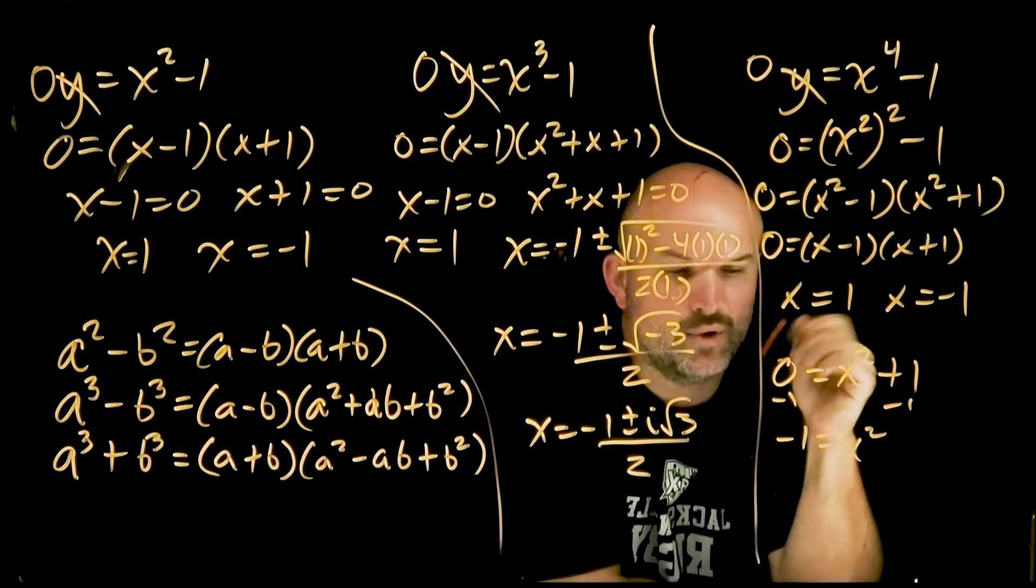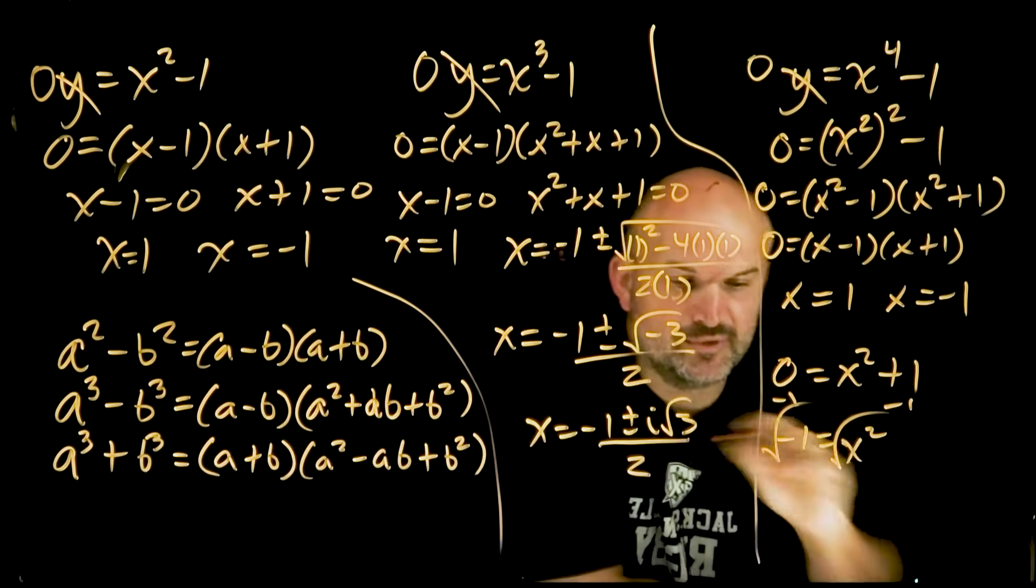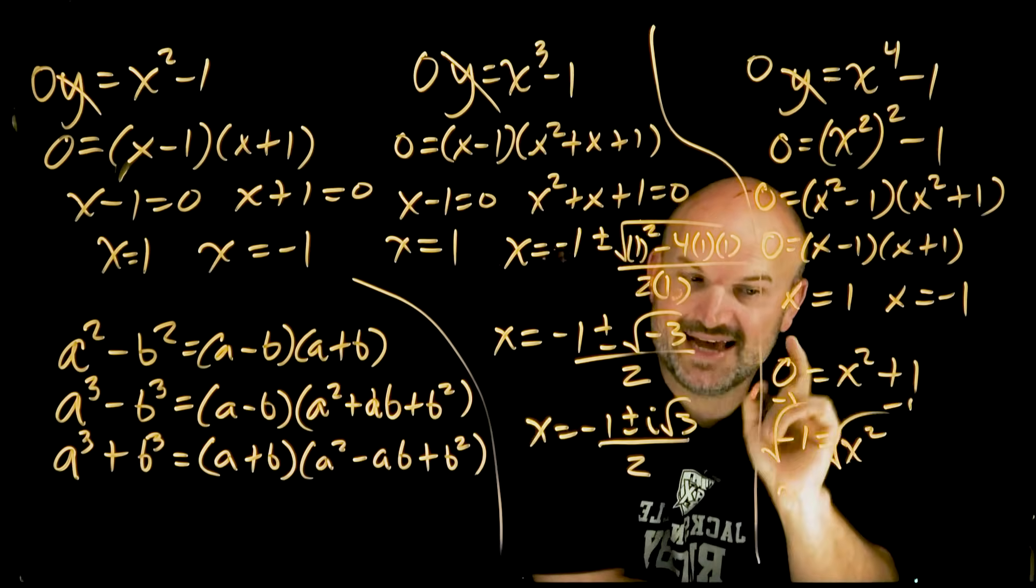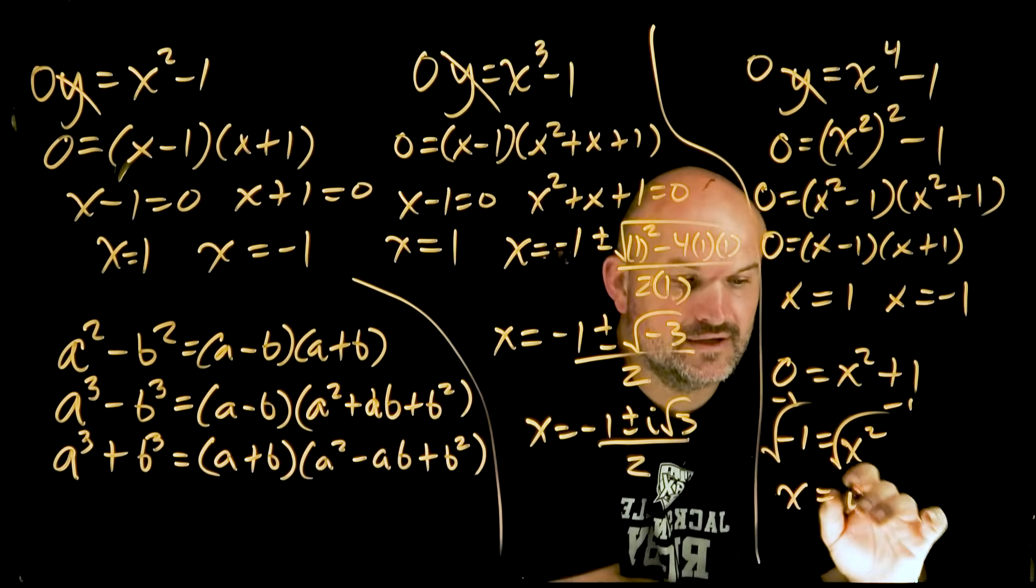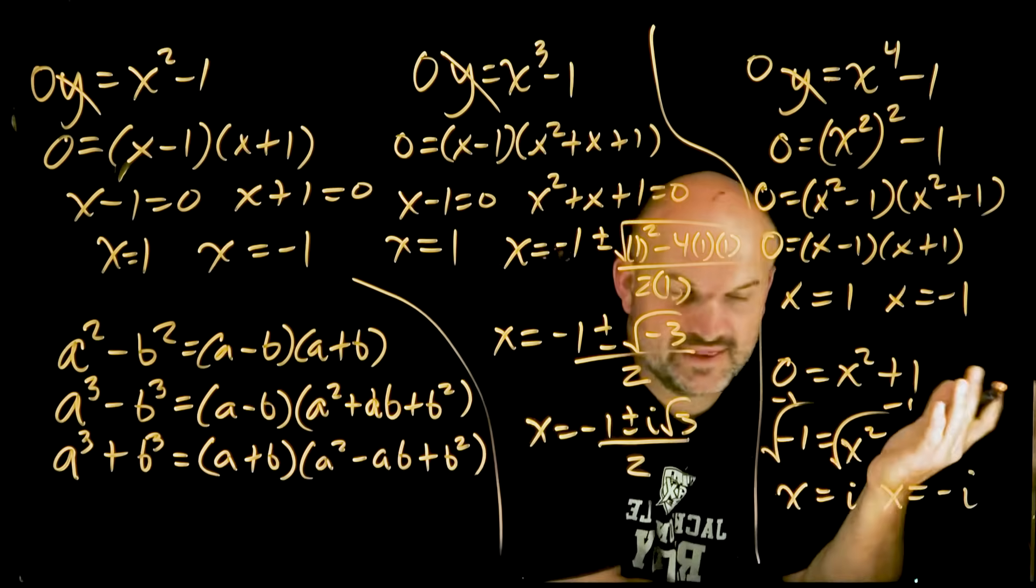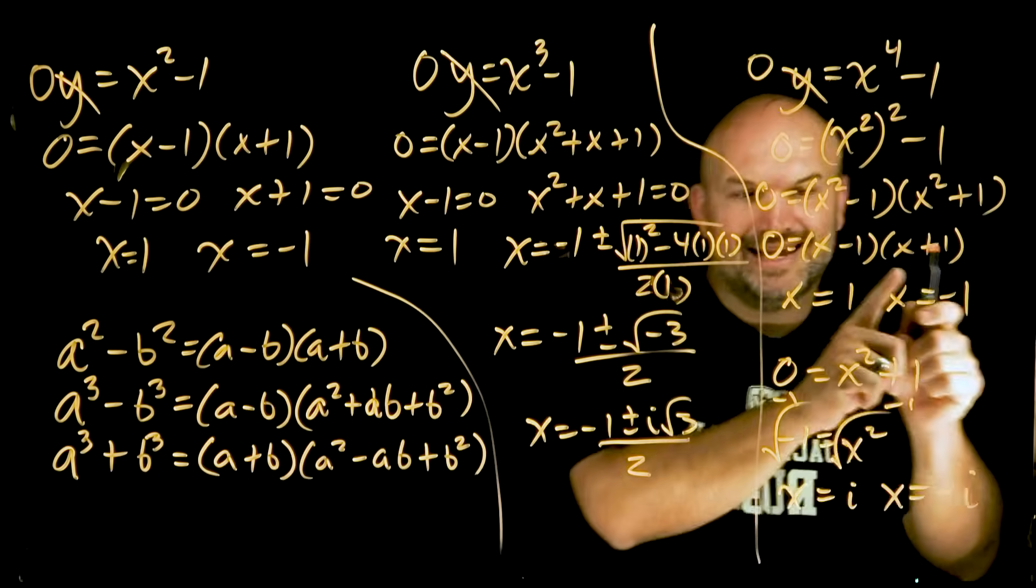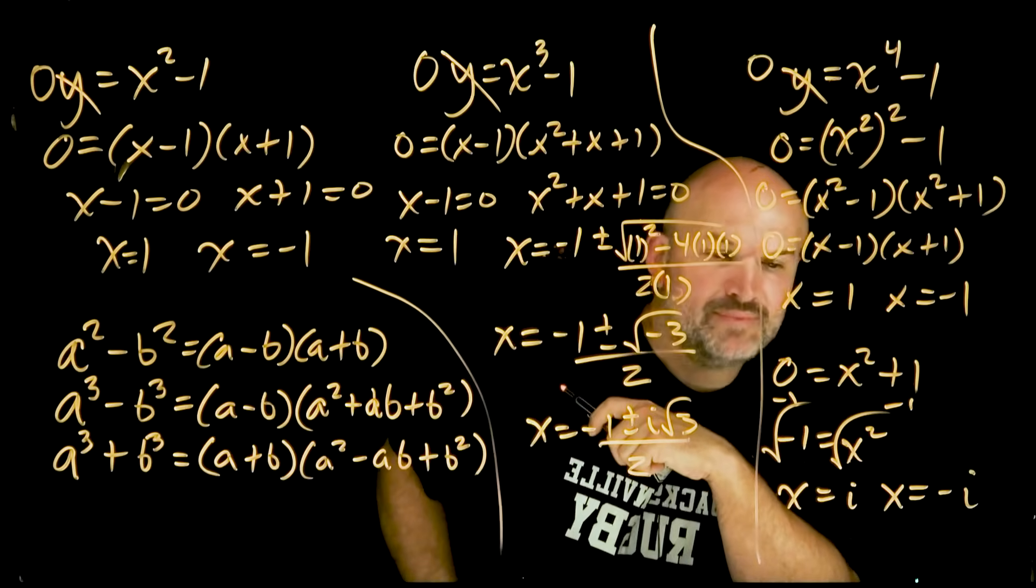If I go ahead and subtract a one on both sides, I get negative one is equal to x. Then I can take the square root of both sides. And remember the square root of negative one is going to be i. But since we're introducing the square root, we have to include the positive root as well as the negative root. So now you can see I have negative i, i, one, and negative one. Four solutions for my polynomial that's raised to the fourth power.